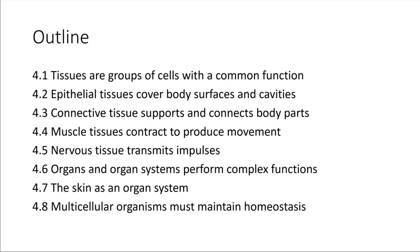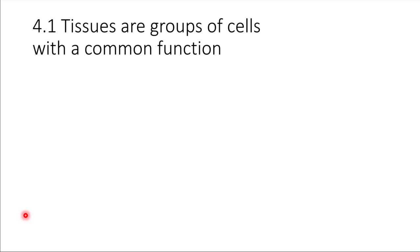We're going to spend a lot of time in this chapter exploring the four primary tissue types. We'll define what a tissue is, we'll spend most of our time describing these four different tissue types, and then we'll also take a look at some examples of organ systems, which are what ultimately make up the human body. So let's go ahead and get started with a basic definition for tissues.